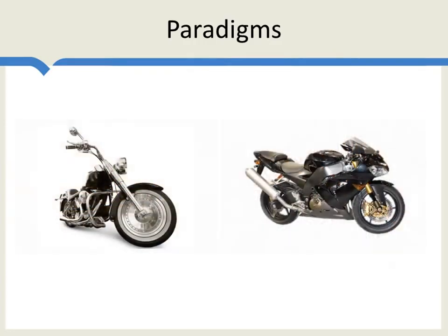When we actually look at the trade data, however, the paradigmatic example might actually be motorcycles. One country exports these motorcycles and imports those motorcycles, and the other country does the reverse. That's peculiar because at first glance these motorcycles look awfully similar. Why should one country be exporting one and importing the other? And yet, this intra-industry trade — trade based upon similar goods where one country is both exporting and importing the same or a similar good — turns out to be very common.